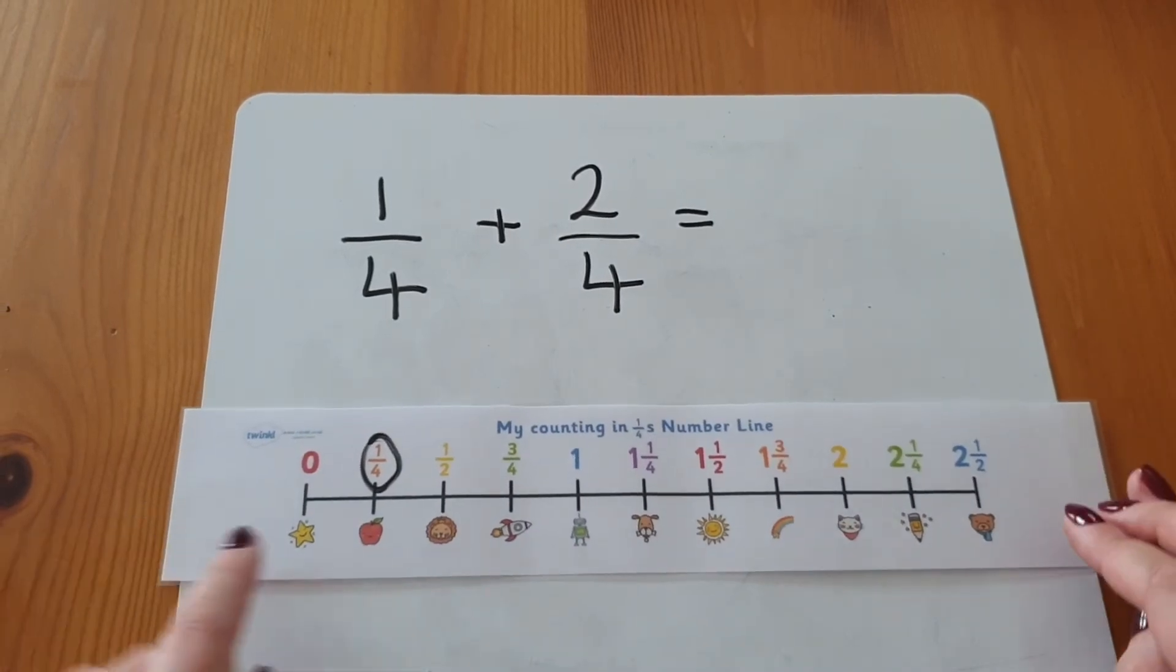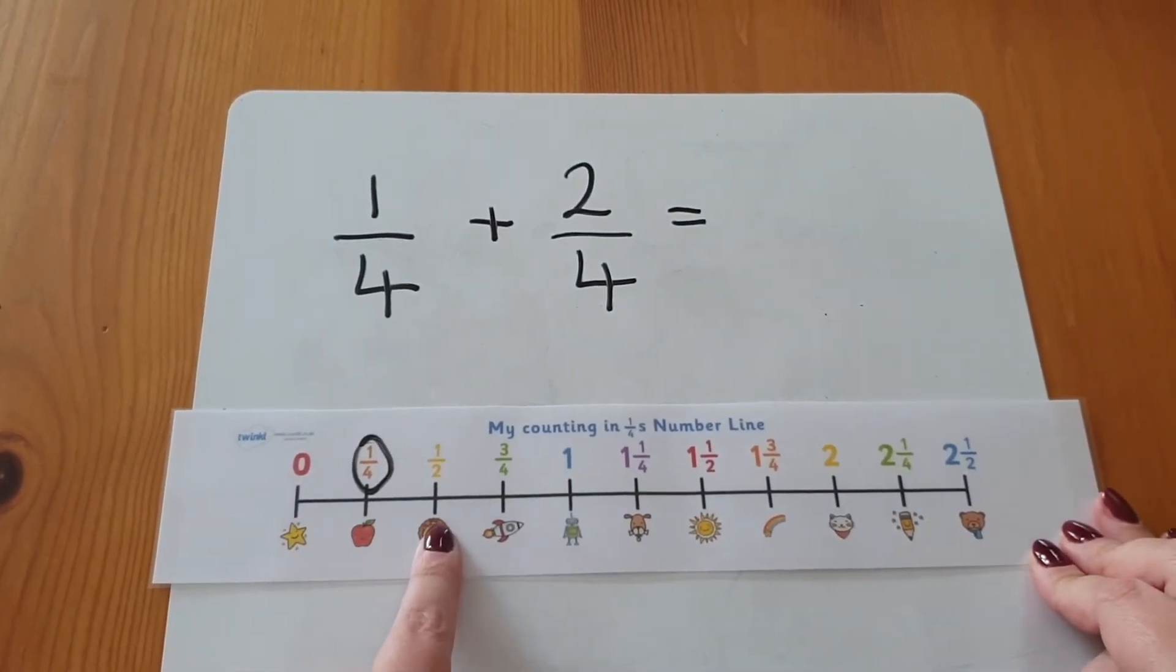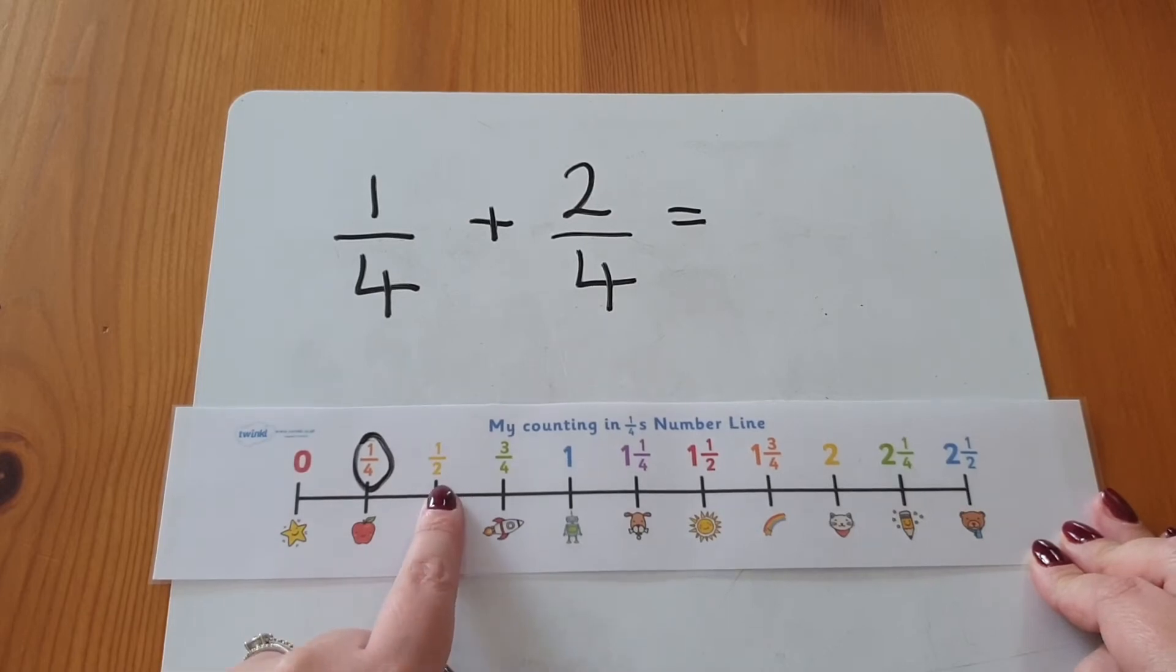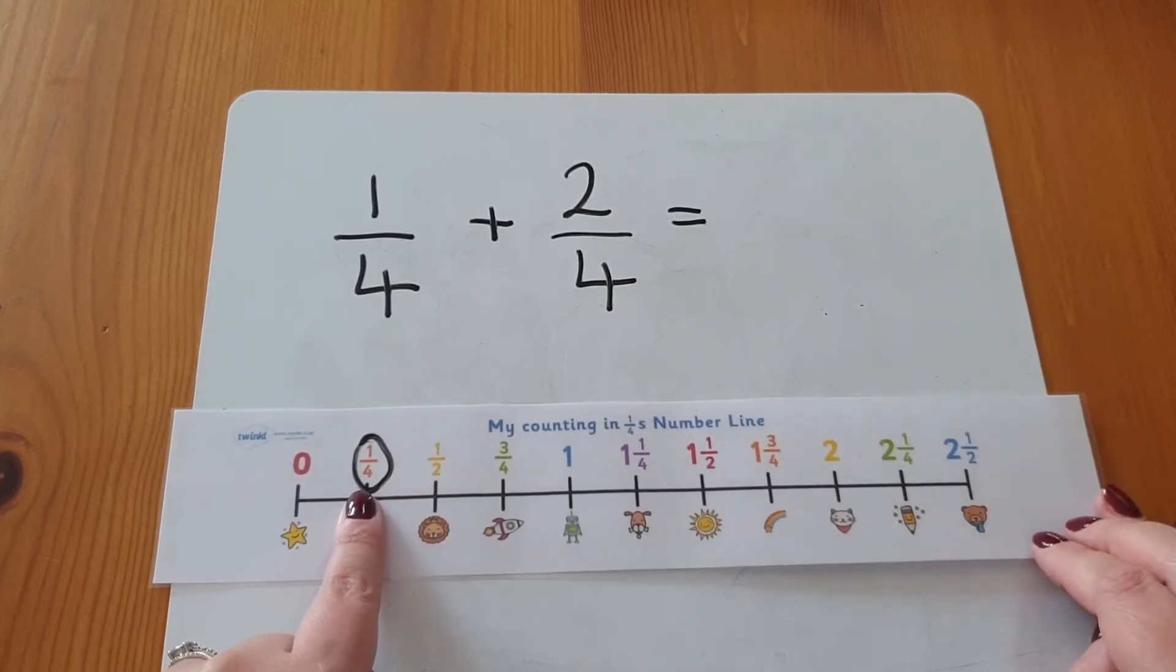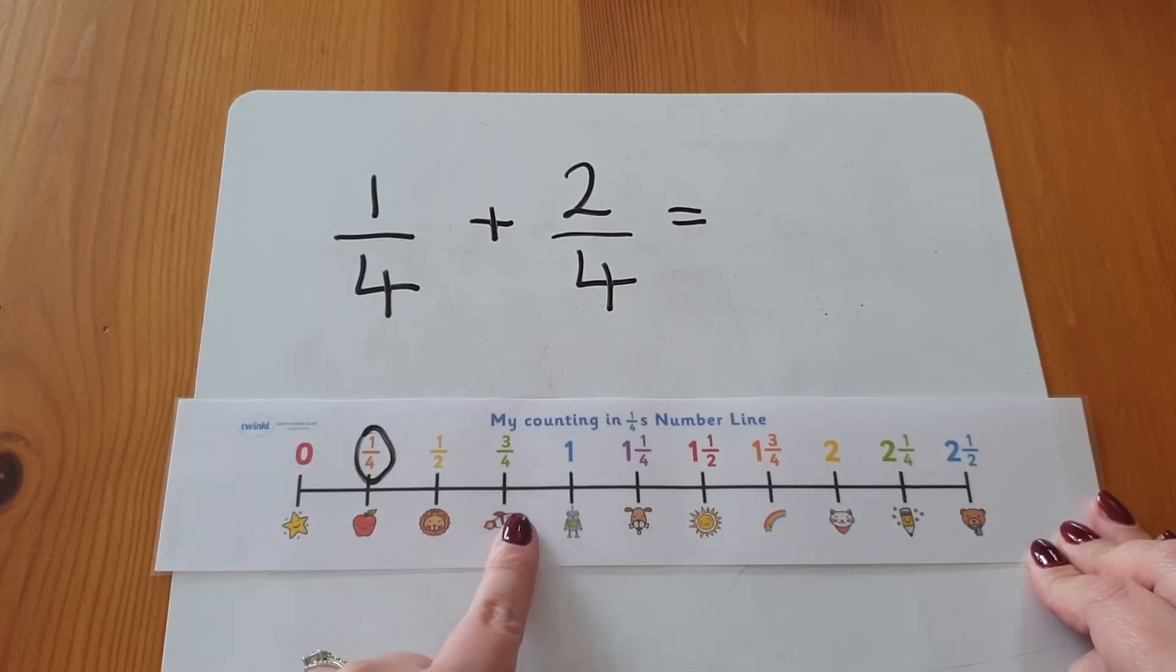I know that two quarters is two jumps because one half is equal to two quarters. So from one quarter, I'm going to do my two jumps. One, two.